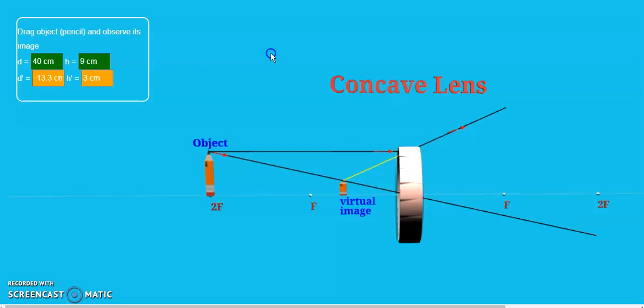Last time we discussed about the convex lens, and today we're going to find out how ray tracing works in concave lens.